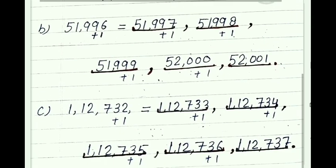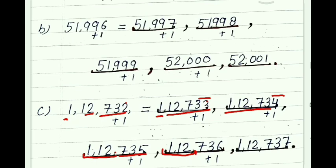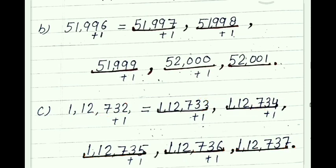Next, part C. Given: one lakh twelve thousand seven hundred thirty-two. You can check the last two digits. After 1,12,732 comes 1,12,733. Only the last digit is changing. Then 1,12,734. Then 1,12,735. Then 1,12,736. And after 36 will be 37 — so 1,12,737. You can do it by checking last digits or by adding 1; the answer will be same. Both methods you can apply.